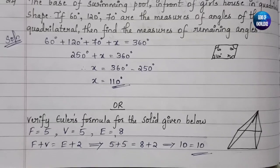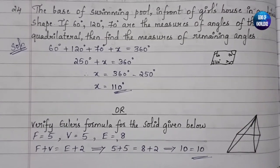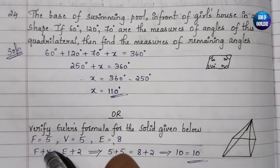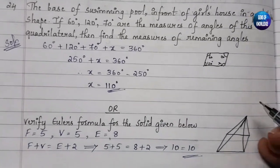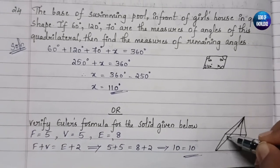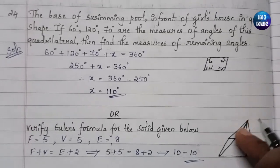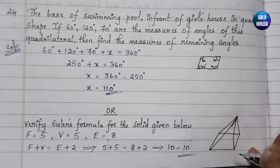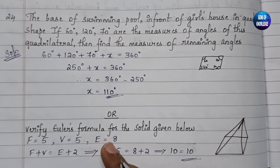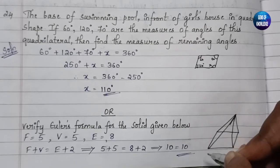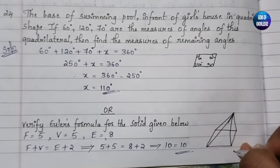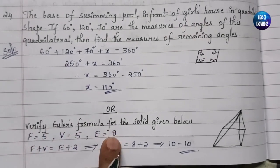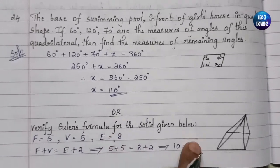Next question: Verify Euler's formula for the given solid. Euler's formula is F + V = E + 2, where F is faces, V is vertices, and E is edges. Counting from the solid: F = 5 faces, V = 5 vertices, E = 8 edges. Checking: F + V = 5 + 5 = 10, and E + 2 = 8 + 2 = 10. Both sides are equal, so Euler's formula is verified.